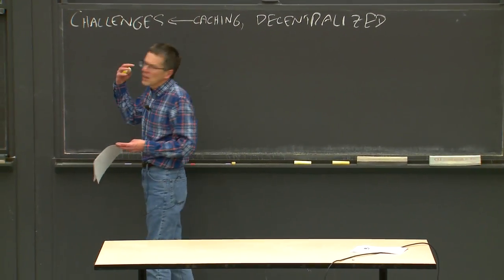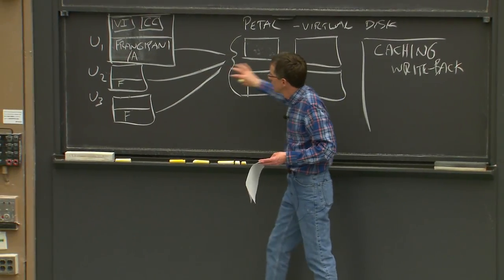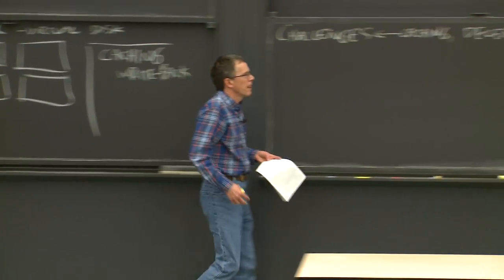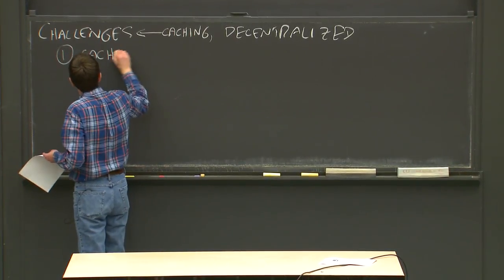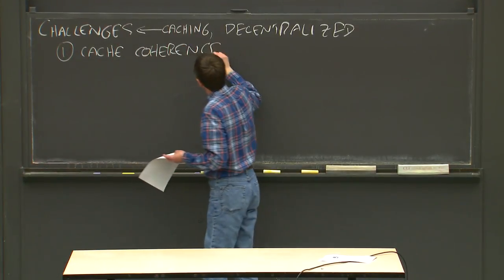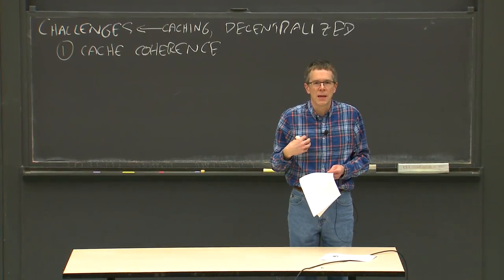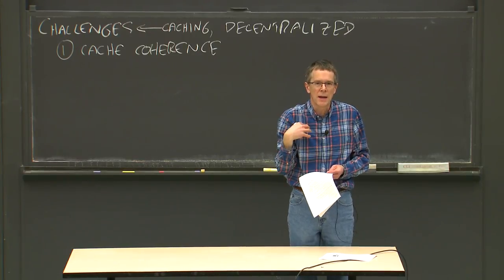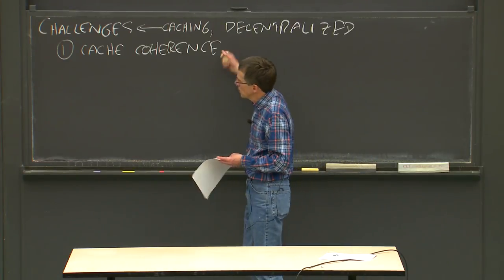Cache coherence is the property of a caching system that even if I have an old version of something cached, if someone else modifies it in their cache, my cache will automatically reflect their modifications. We want this cache coherence property.